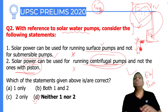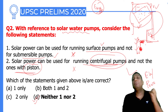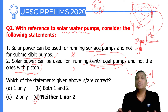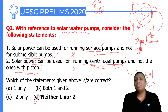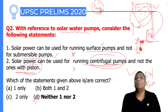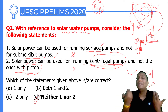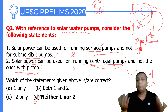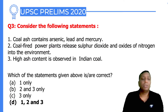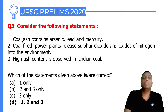The solar panel is always above the ground. The pump's position and type do not matter because sunlight is already being utilized for power generation from above. Neither one nor two is the correct answer.